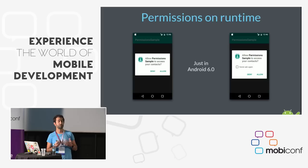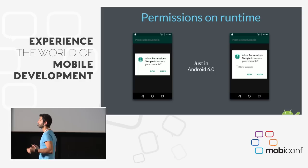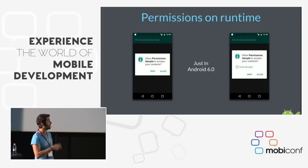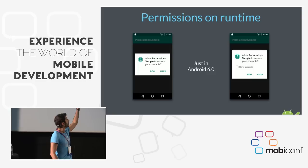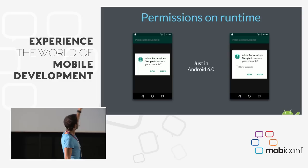Now in Android 6, when the user goes to the Play Store, we are not going to show them the permissions screen before they download the app. The user just downloads it, and then we are the ones who have to ask for permission when the user tries to do something that requires one. This is a true screenshot of a sample app I created. We're going to show this dialogue to the user the first time they try to use a feature requiring a permission.